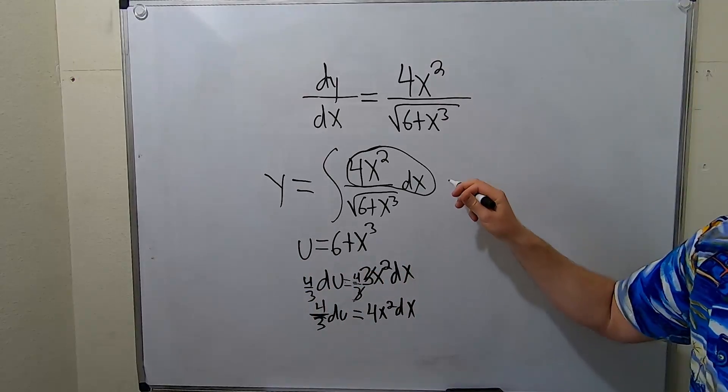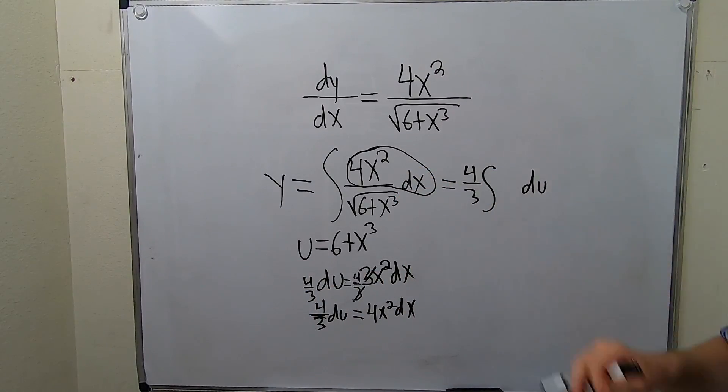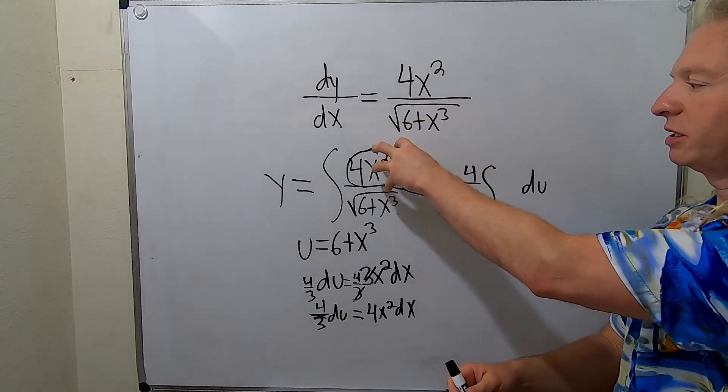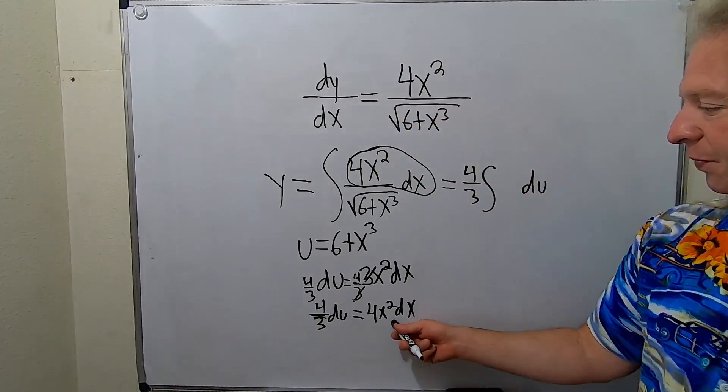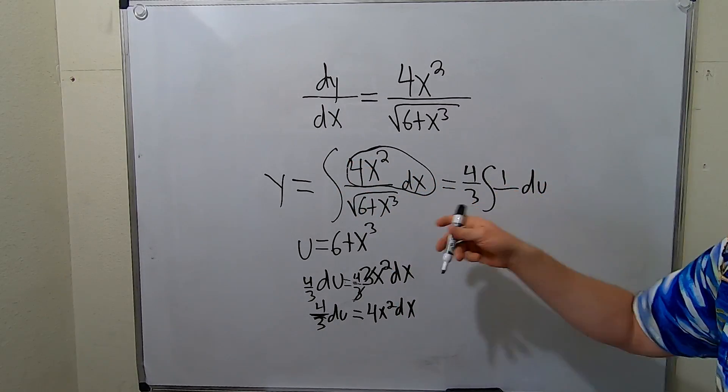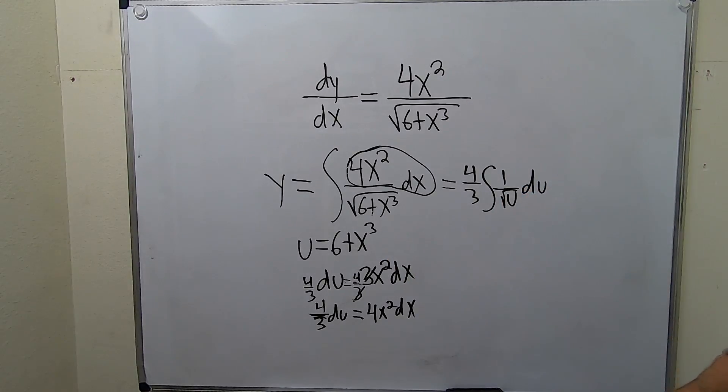So now we can pull out that 4 thirds. So replace this with 4 thirds. And then we have the du over here. So the only thing that has been replaced at this point in time is this. This is 4 thirds du. Then we're left with 1. There's a 1 here over this. But this piece, inside piece is u. And so now here we are.